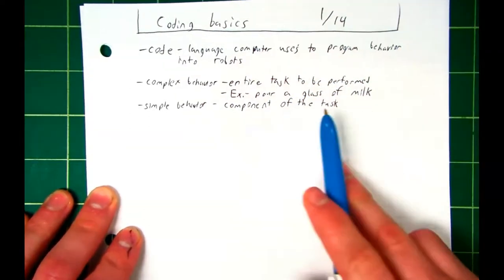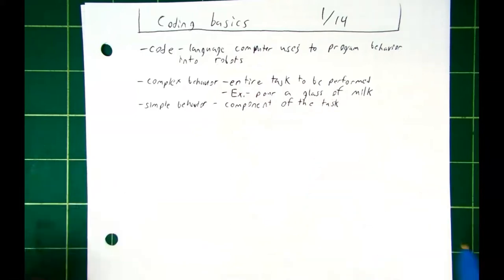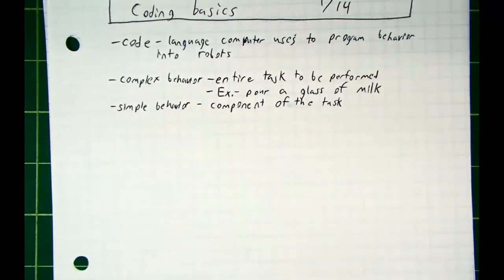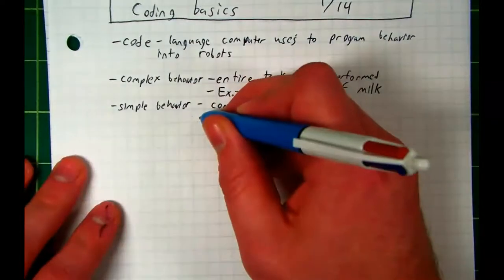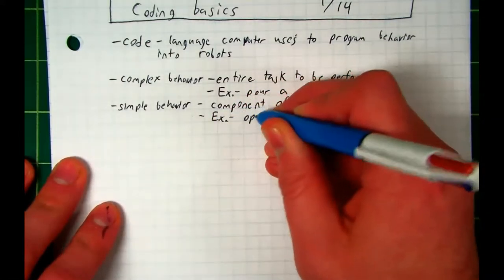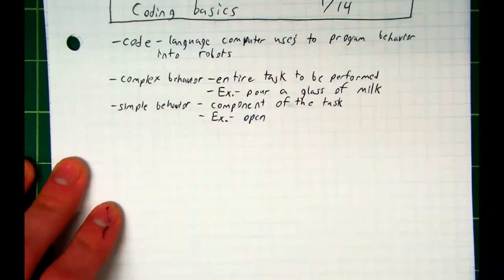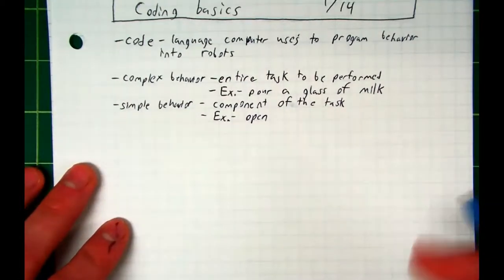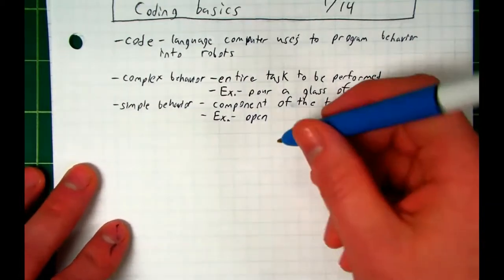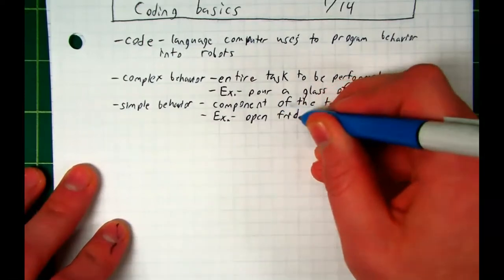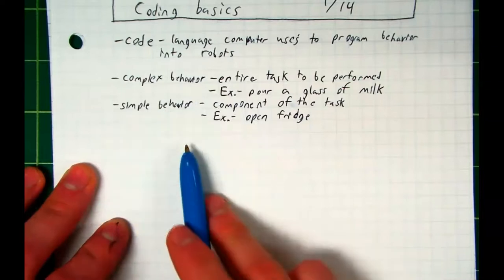So if we go back to our pour a glass of milk analogy, let me zoom in just a little bit, this would be something like opening the fridge. That's just a small part of what you have to do when pouring a glass of milk. You've got to walk up to the fridge, pull it open, grab the milk, walk back to your cup, pour, etc., right? Does this make sense to everybody? A complex versus a simple behavior?